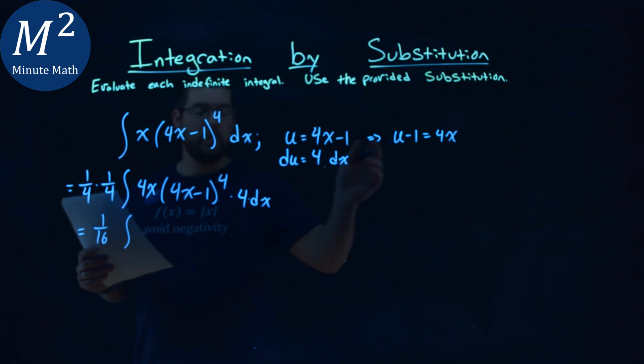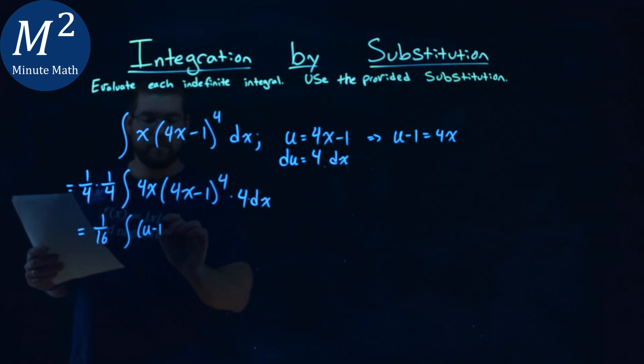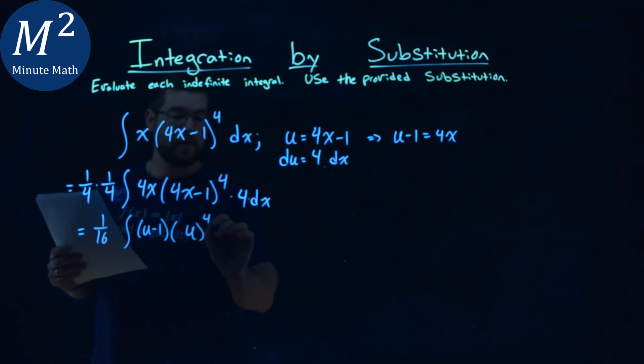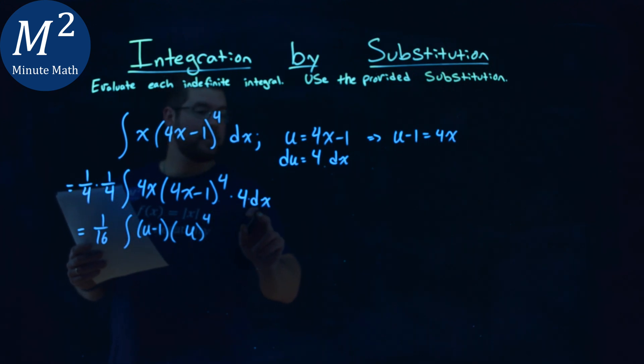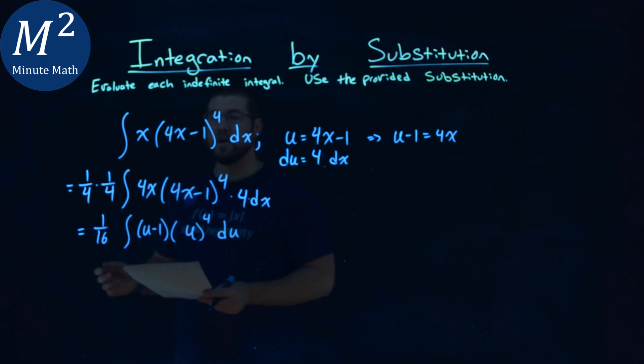Instead of 4x, we have a u minus 1 times, well, this is just 4x minus 1 is a u to the 4th power, and then 4dx is equal to du. And it lines up pretty good.